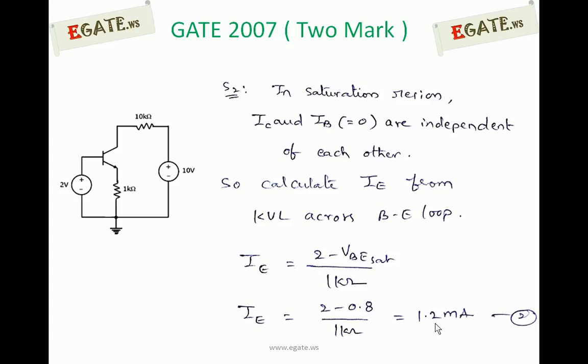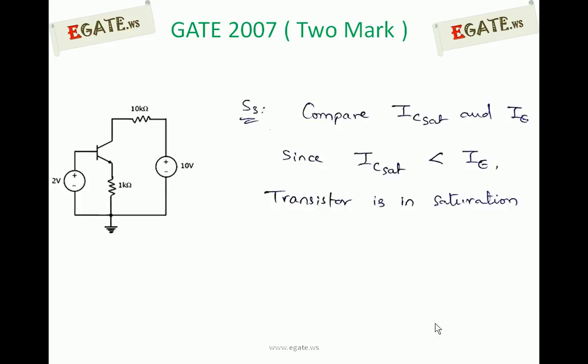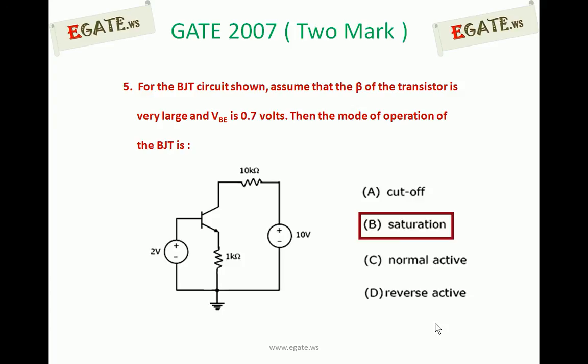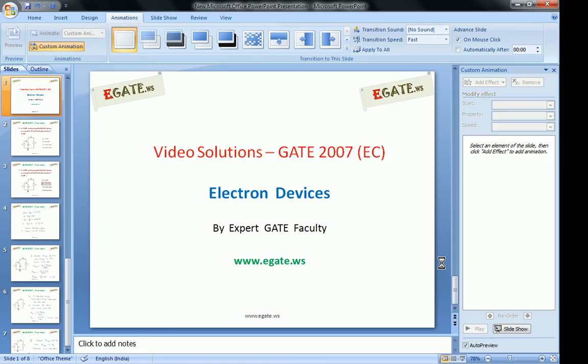Due to the collector-emitter loop, the current is 9.8/11 mA, which is less than 1 mA. Due to the input loop, the current through the 1 kΩ resistor is 1.2 mA. Since IC saturation is less than IE from the base-emitter loop, the transistor is definitely in saturation. If IC saturation were greater than IE, the transistor would be in the active region. Therefore, the correct answer is that the transistor is biased in the saturation region.